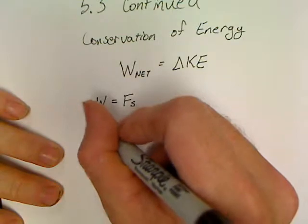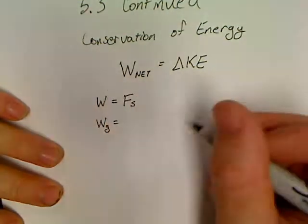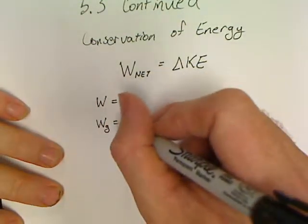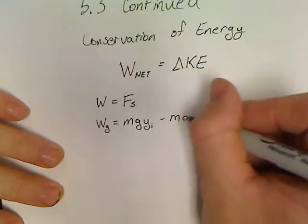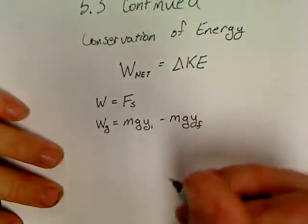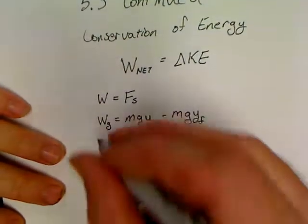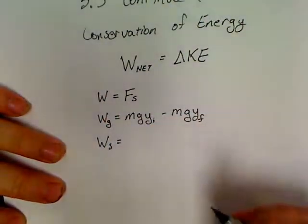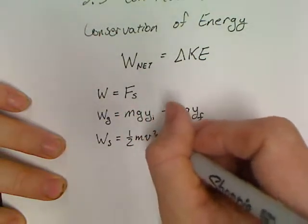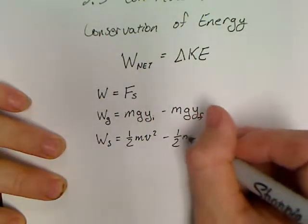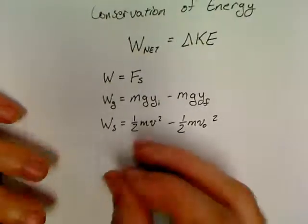Is something falling up or down? Well, that means you've got gravity taking place in this problem. So we've got an MGY initial minus an MGY final. Is there a problem with a gigantic bungee cord? Well, that's nothing but a spring. So that means we can include this, 1/2 MV^2 minus 1/2 MV_0^2.